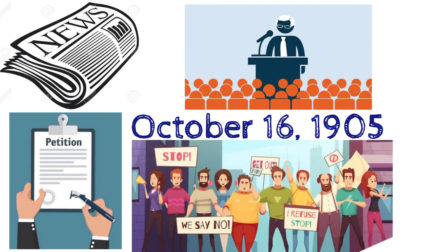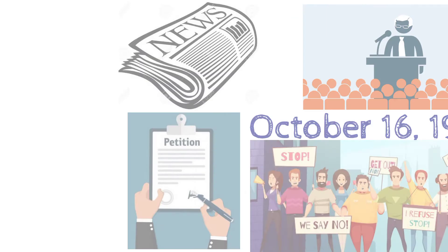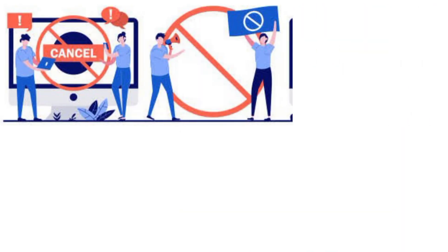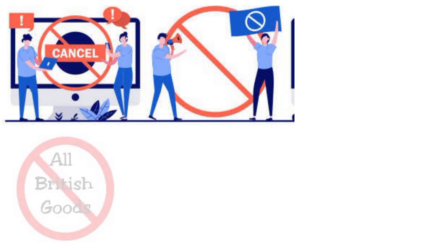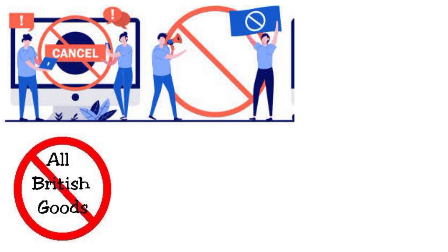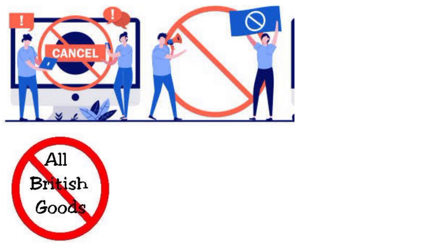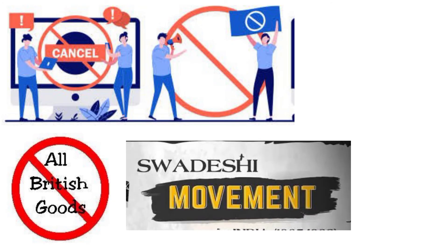Public meetings, processions, and demonstrations were held. To pressurize the British government, they boycotted British goods, schools, and colleges. This boycott blossomed into a full-fledged Swadeshi movement.